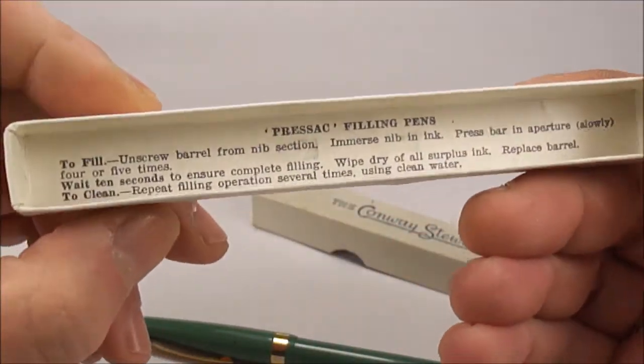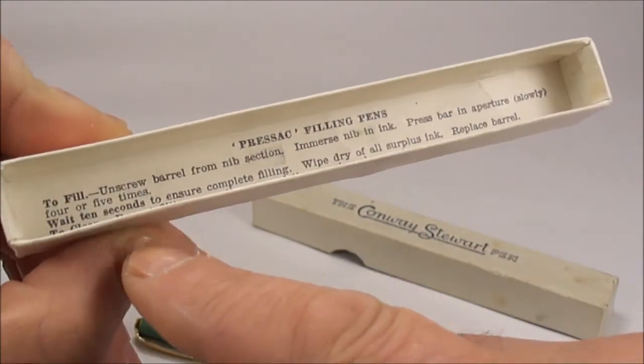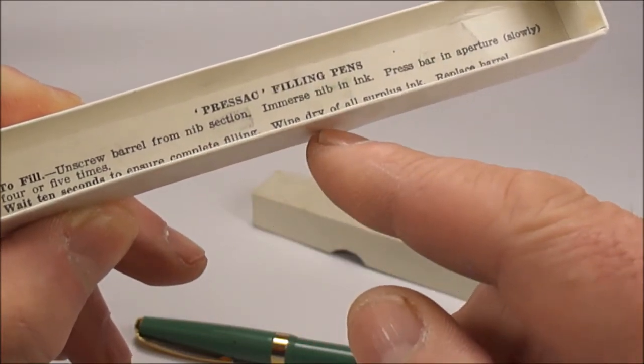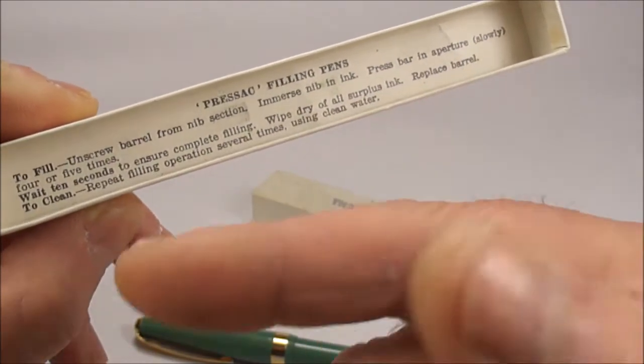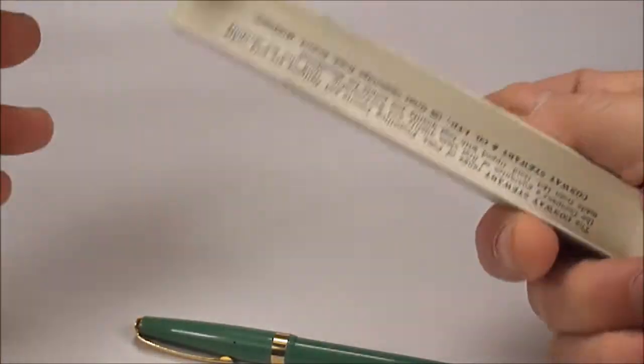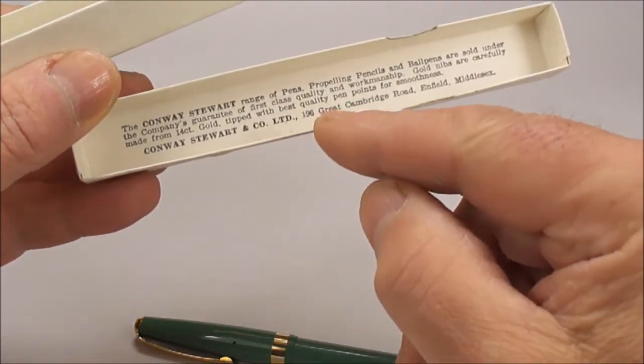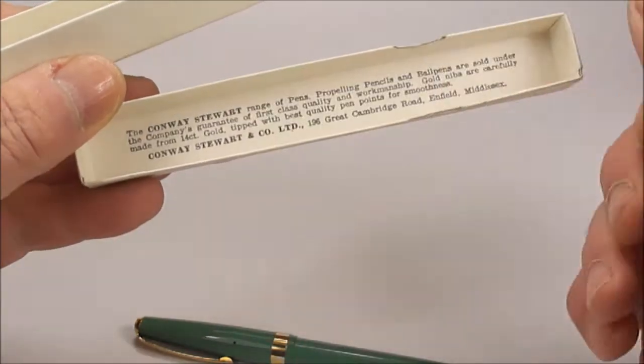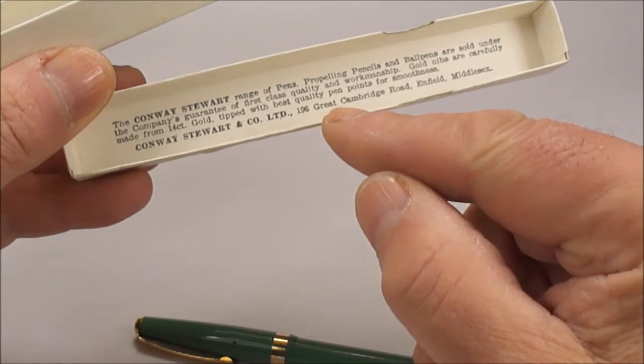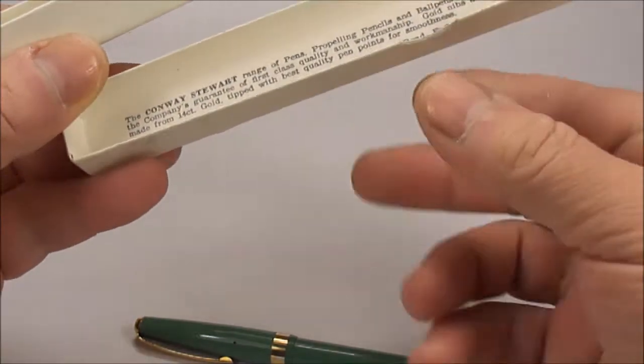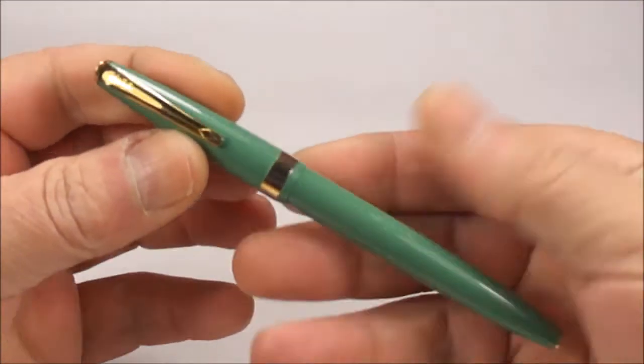Just show you inside the box there. You've got the filling instructions inside. It says to fill: unscrew barrel from the nib section, immerse nib in the ink, press bar in aperture slowly four or five times and wait ten seconds, etc. On the other side of the box, you've got the Conway Stewart range of pens and propelling pencils. Gives you a little bit of information regarding the Conway Stewart, and we've got the address: 196 Great Cambridge Road, Enfield, Middlesex. So that's the box.